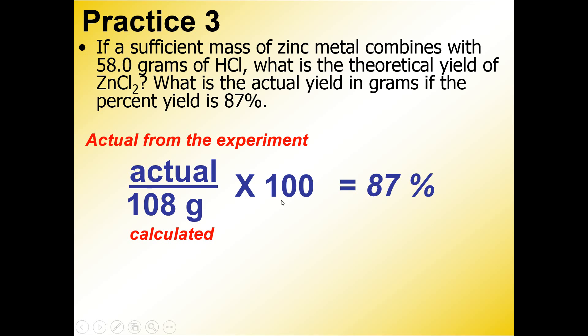Algebraically what you're going to do is divide both sides by 100, because you can see the left side where the x is the actual, it's being multiplied, so you always do the opposite. Divide both sides by 100, and to isolate the actual yield, you're going to multiply both sides by 108, and when you do that, you should get 94 grams as our final answer.